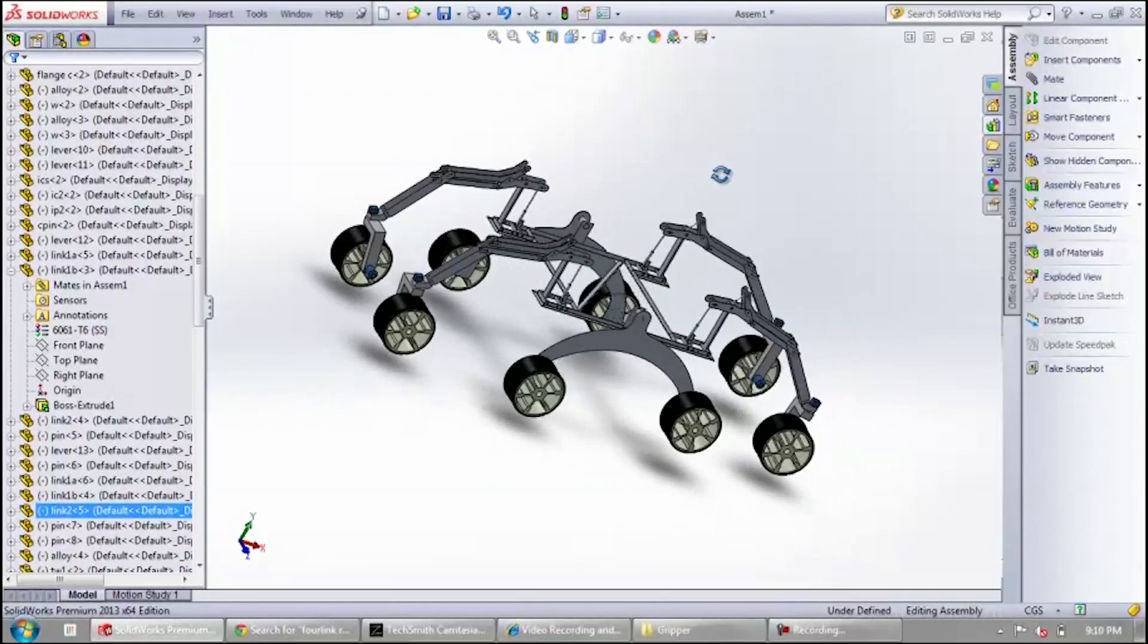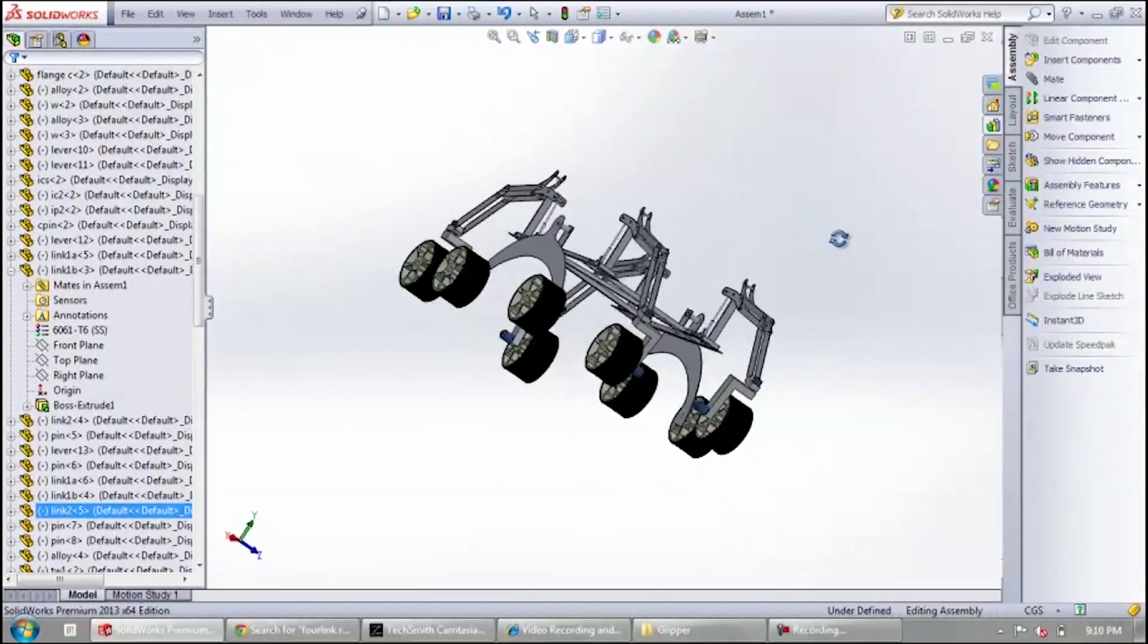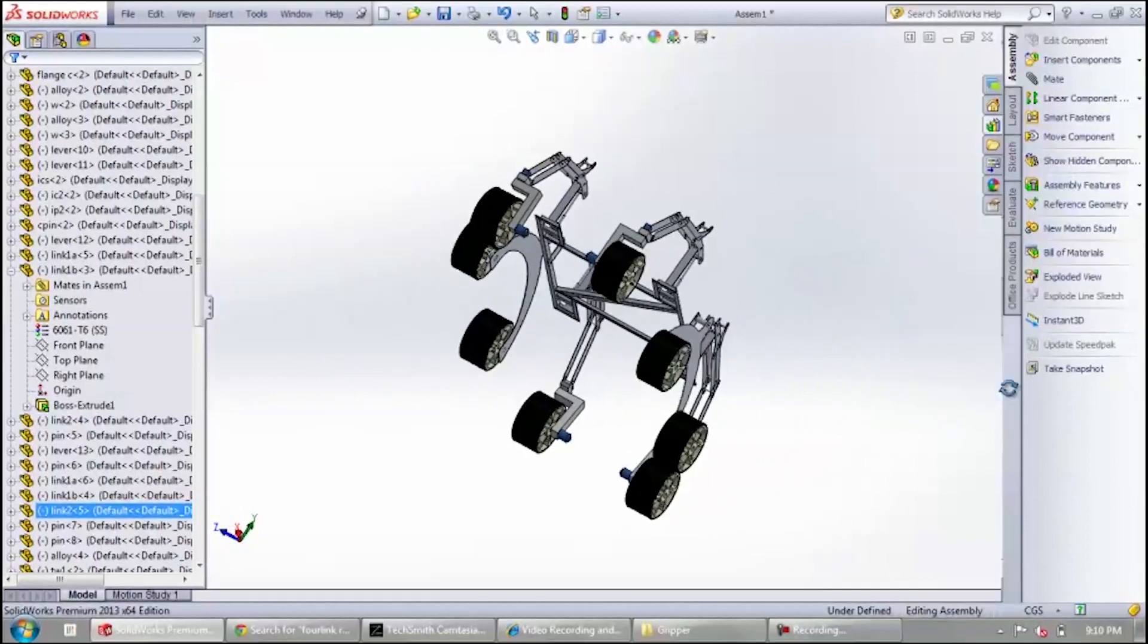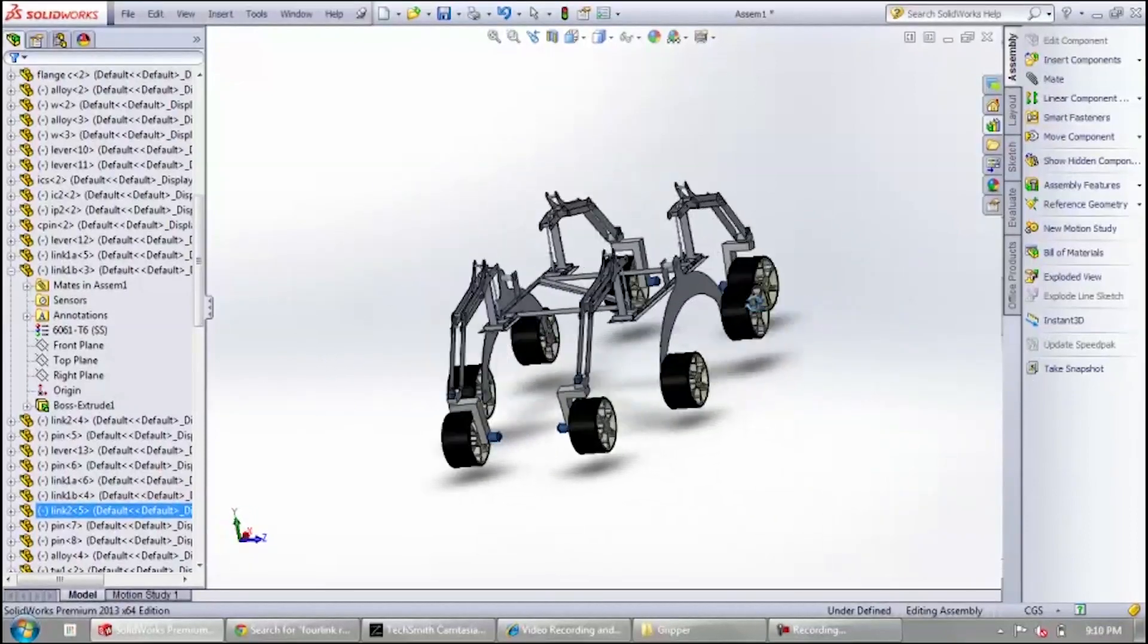Since our eight-wheeled Rover combines the rocker bogey mechanism and a bio-inspired design, it can climb over obstacles that are thrice as big as the wheel diameter.